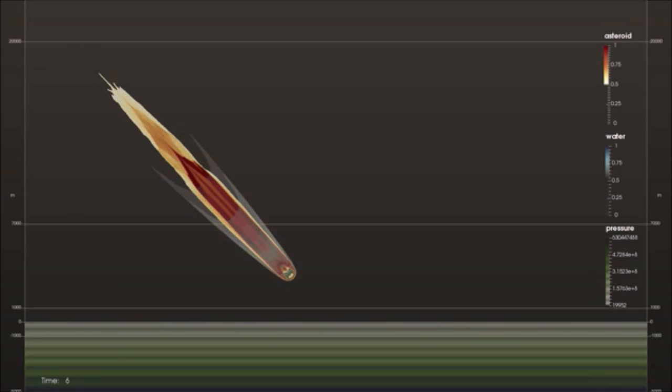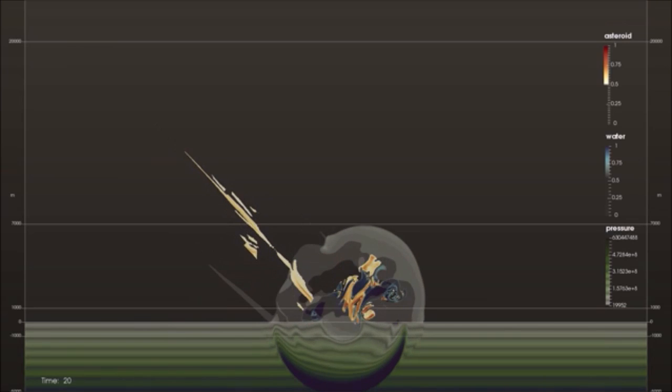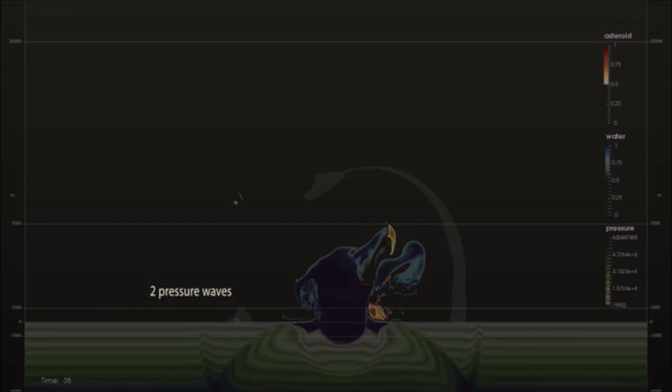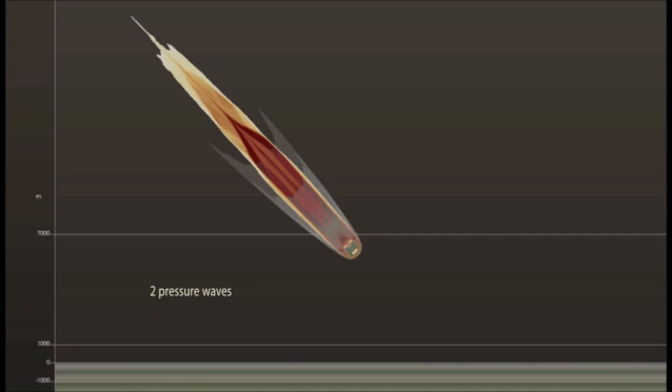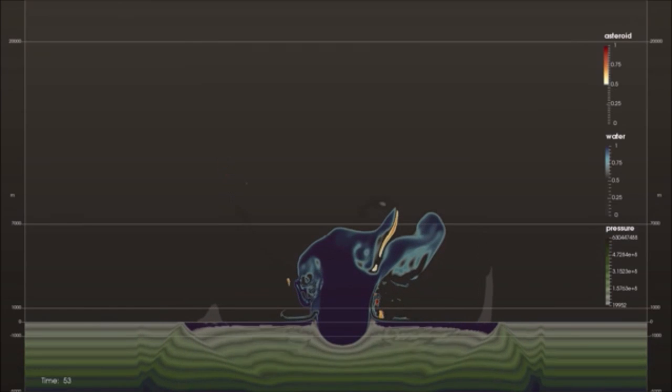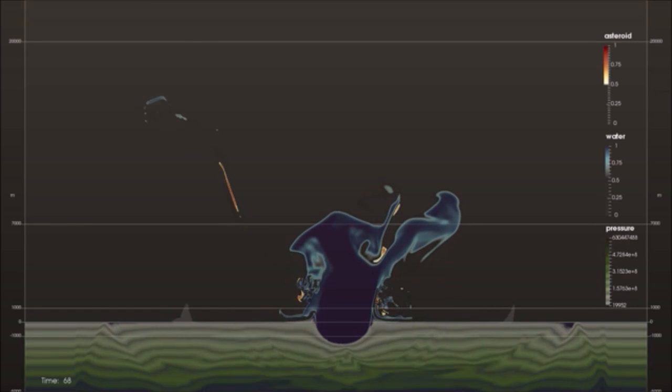A feature discovered through this visualization is a pressure enhancement uprange of airburst impacts. Two pressure waves combine to create this: one from the asteroid in its trajectory, and one from the explosion when the asteroid material hits the water. This may affect wave propagation and will have to be studied.